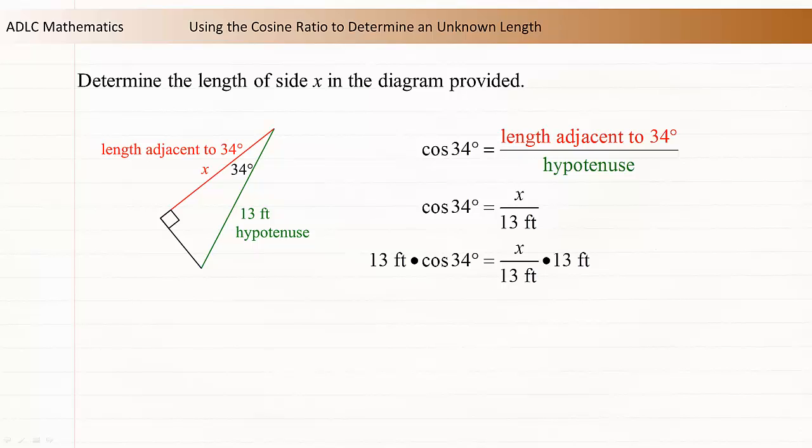So multiply both sides of the equation by 13 to isolate x. The two 13 foot expressions reduce.